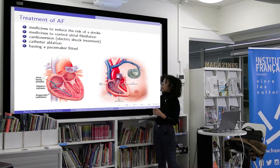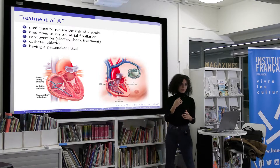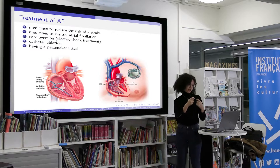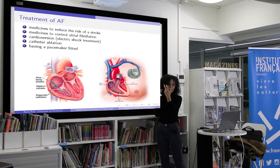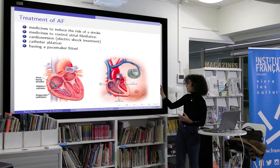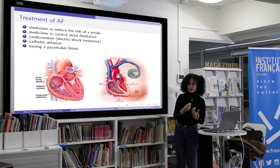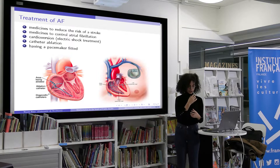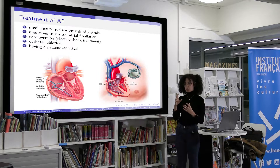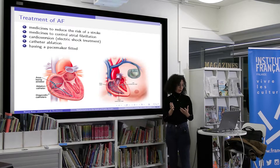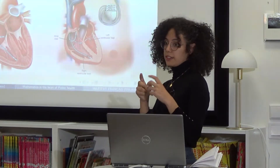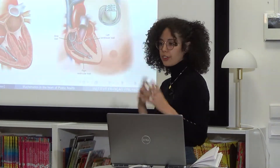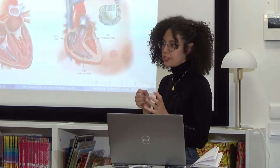Another type of treatment is having a pacemaker fitted. Remember that the sinus node is the natural pacemaker of the heart - here we have an artificial sinus node. This pacemaker is placed linked to the heart in a very invasive surgery where you go under anesthesia. This pacemaker acts like your sinus node - it tells your heart when to beat. All these methods are used to treat patients.